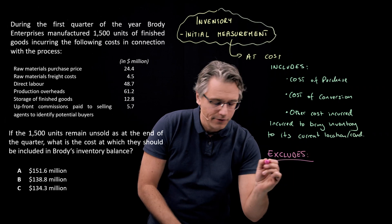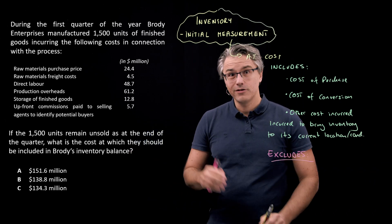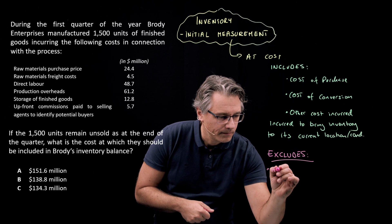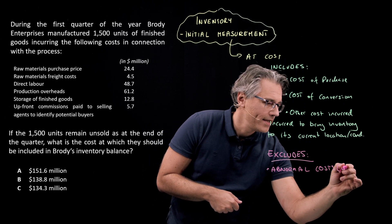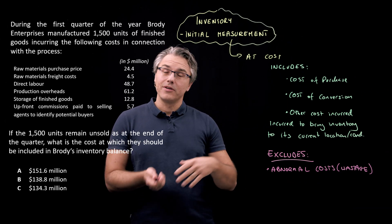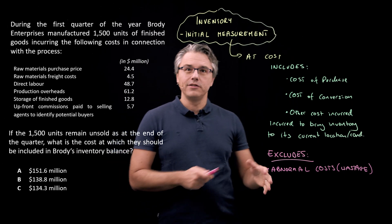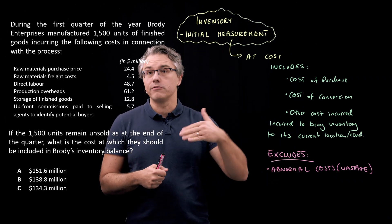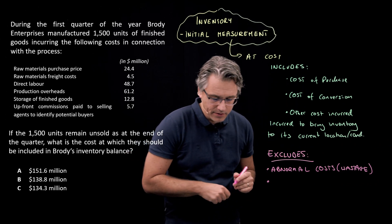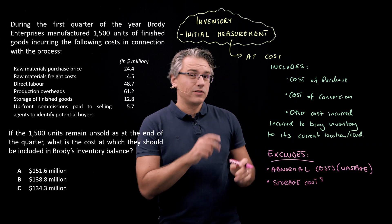This is really important because if you get a question about this in the exam, there will for sure be some items on that list which you should exclude from the initial cost of inventory. That will be two things. First, abnormal costs — meaning wastage. For example, if instead of using one portion of material you had to use two because the first was wasted due to some mistake or inadequate processes, you don't count the materials twice. The second item is storage costs, which should not be included in the value of inventory.